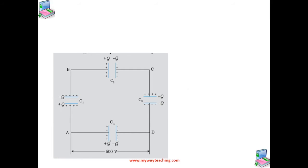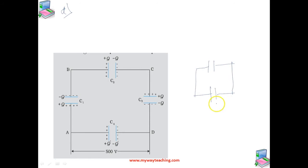Here the capacitors C1, C2, and C3 are connected in series — they are connected end to end, not between the same two points. However, C4 is connected in parallel. If we find the equivalent capacitance for C1, C2, C3, the network reduces to that equivalent capacitance in parallel with C4. Let us call the equivalent capacitance of C1, C2, C3 as C dash.